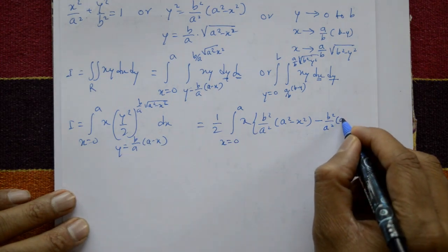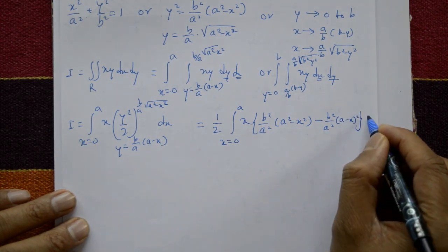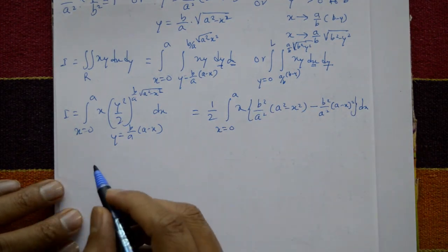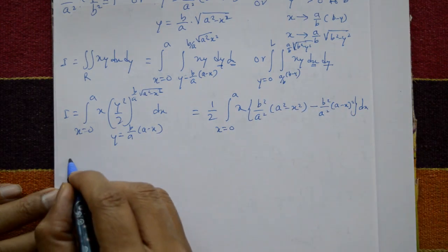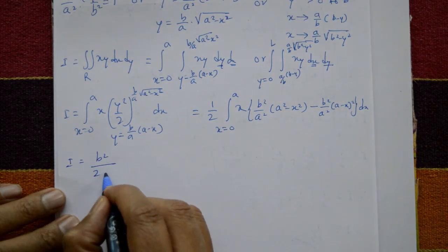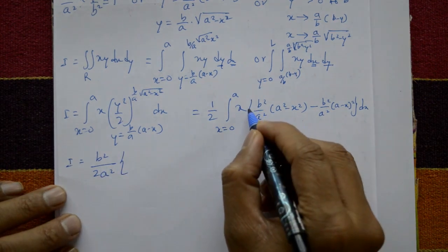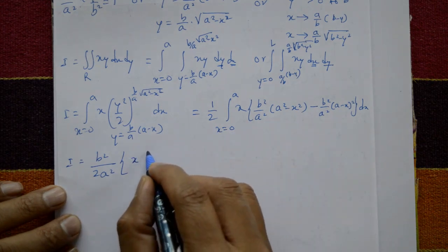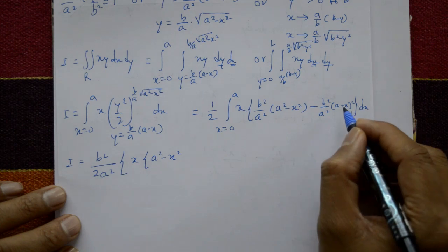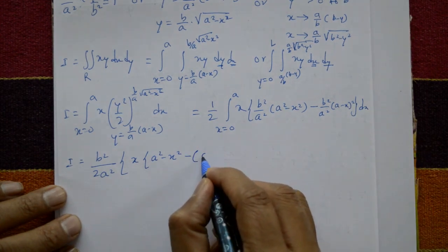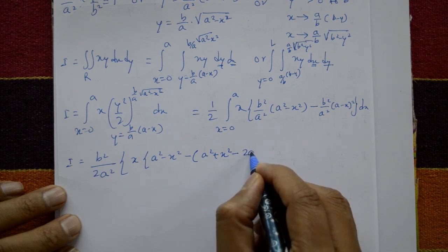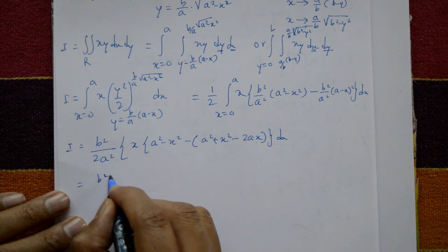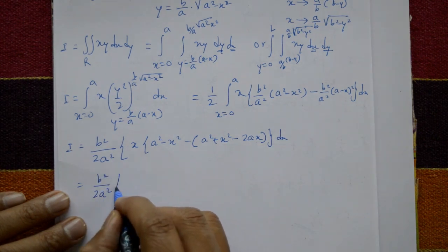We get: (1/2) ∫₀ᵃ x · [b²/a²·(a²−x²) − b²/a²·(a−x)²] dx. Taking b²/a² outside: (b²/2a²) ∫₀ᵃ x · [(a²−x²) − (a−x)²] dx. Expanding (a−x)² = a²−2ax+x², so the bracket becomes: (a²−x²) − (a²−2ax+x²) = 2ax−2x².